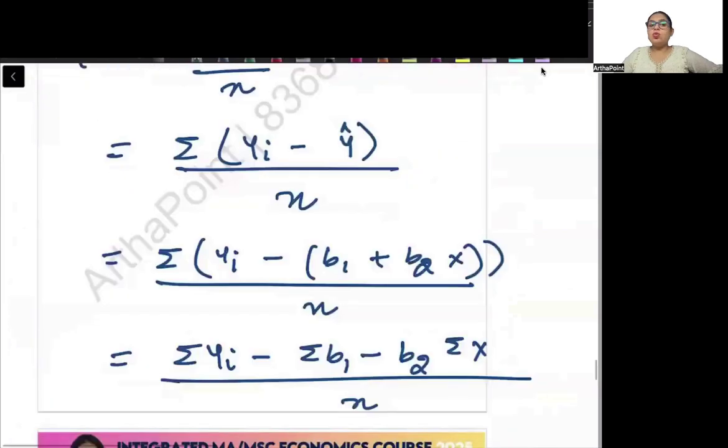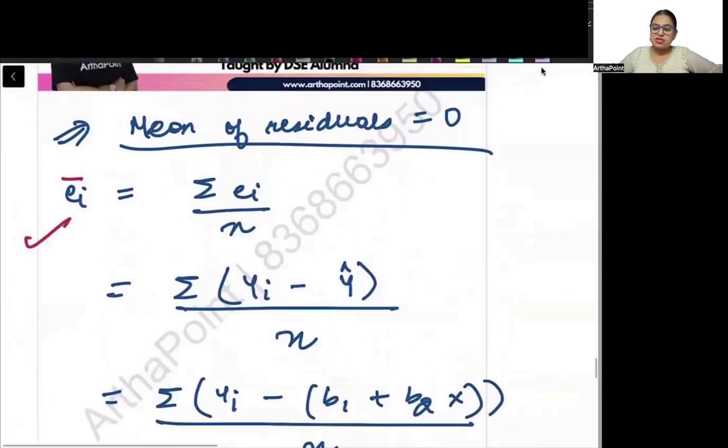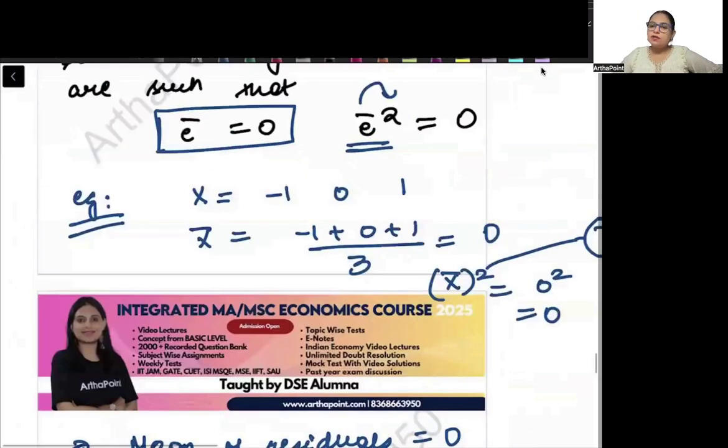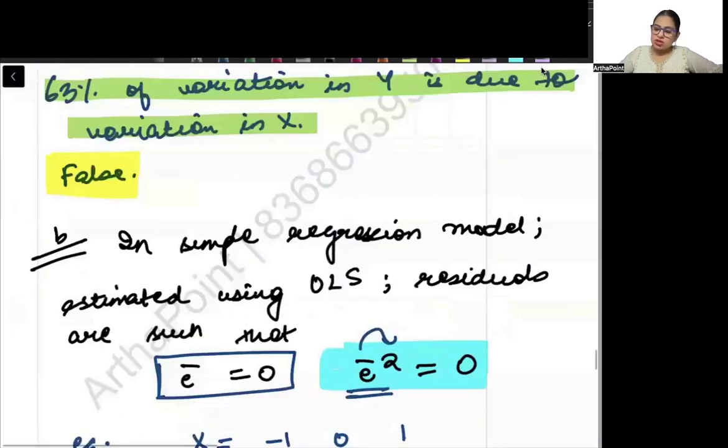So we know that the mean of the error term is 0. And if mean of error term is 0, even if you square it, it doesn't matter, it will remain 0. So this is correct. This is a true statement.